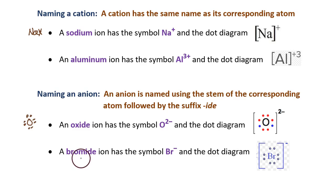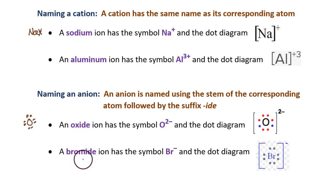For the next example, bromine is in group 7A, so it makes an anion with a negative 1 charge. To create the name, you take the stem of the word bromine — the 'brome' part — and add the suffix -ide, creating the word bromide. The symbol for a bromide ion is Br with a negative in the corner.